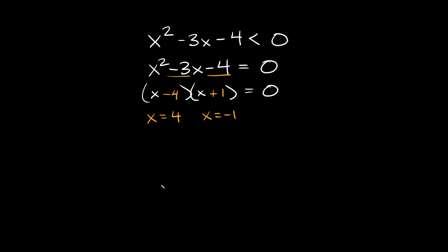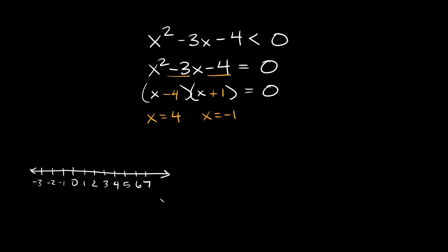Now that we have our solutions, the next thing is graphing those on a number line. Here's my number line, and I want to graph these two points: positive 4 is right here, and negative 1 is right here.